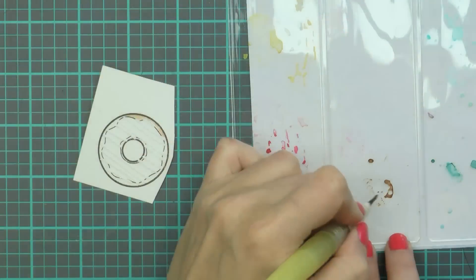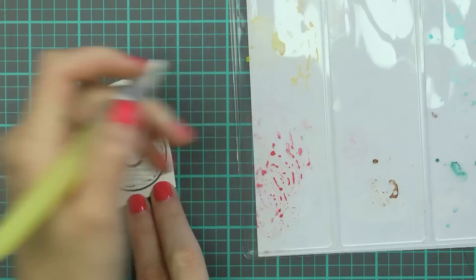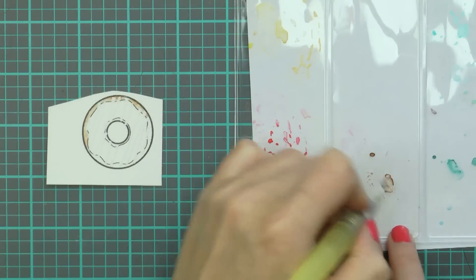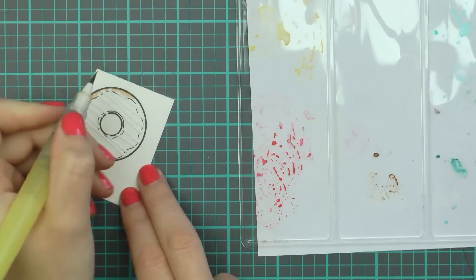The next step is to watercolor our images and I'm going to use my Gansai Tambi watercolors and my distress inks to quickly color these. I'm not doing anything special at all, just going to quickly add some color.